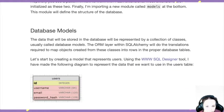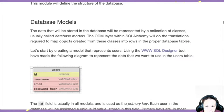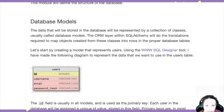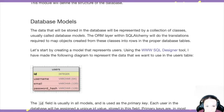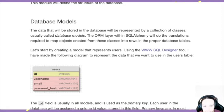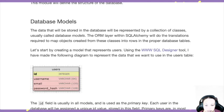The ORM layer does one thing: you build your database model in Python, it translates it by creating some queries that help you create the same thing in your database. The equivalent in your database — because your database doesn't speak Python. In this case you're using a SQL database, so your database speaks SQL, and it will do the translation for you.